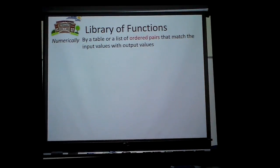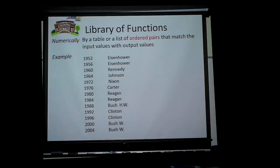Here it is, a list of ordered pairs that's done numerically. And see here, you can see the year with the president who won that election that particular year. Anybody notice a president that's missing that was president during that time? Ford.